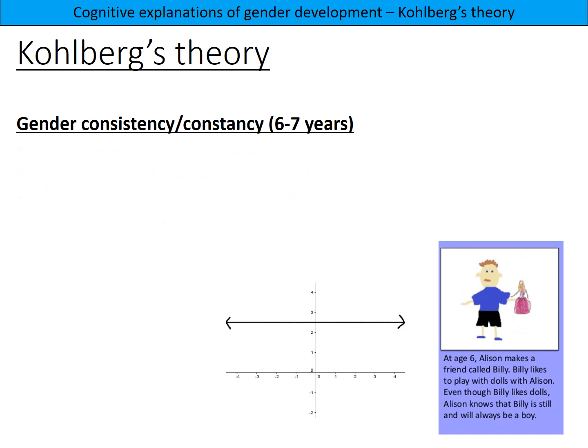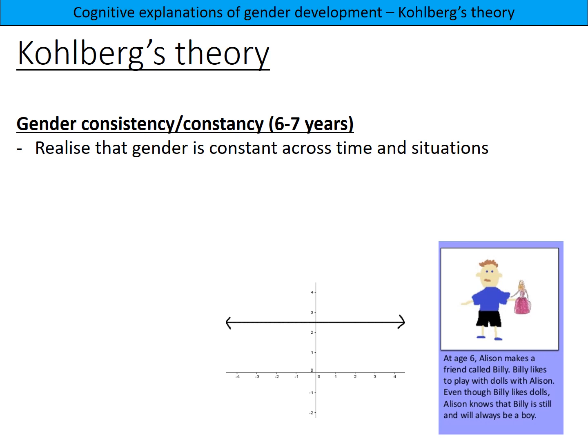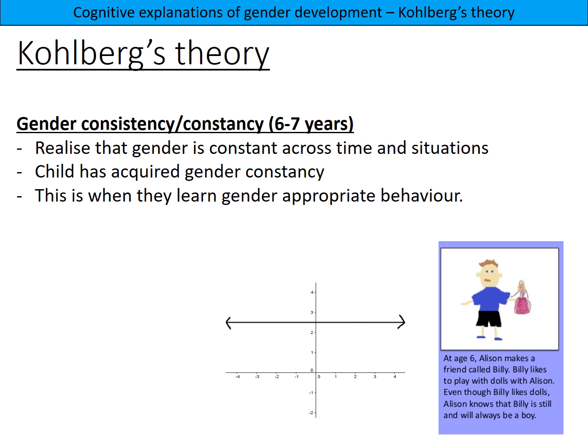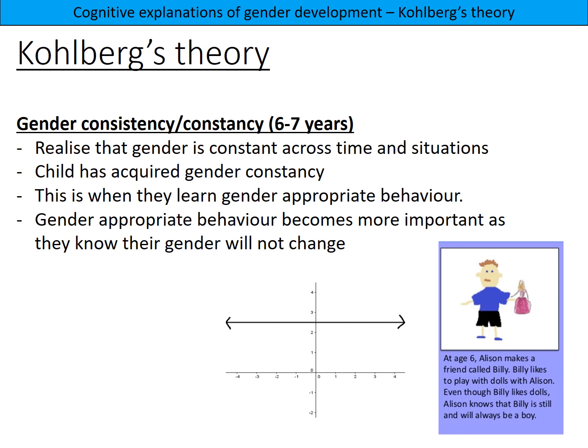The third stage is gender consistency, or gender constancy, at six to seven years old. Children realize that gender is constant across both time and situations — unlike the stability stage, which only covered constancy over time. They have now acquired gender constancy, and gender-appropriate behavior becomes more important to them as they understand that their gender will not change.